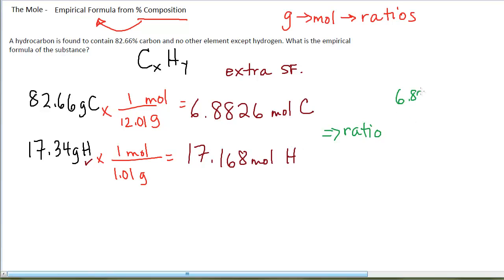So I would divide the 6.8826 divided by 6.8826. That ratio is 1. And then I would divide the 17.168 by my smallest, 6.882, and find that ratio. And that ratio is 2.494.